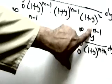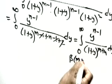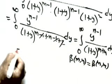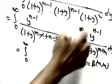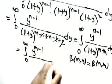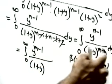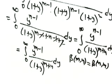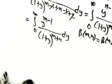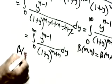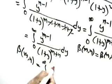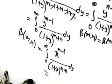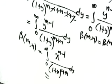Since we already proved beta of m comma n equals beta of n comma m, we can interchange m and n. Replacing y^(n-1) with y^(m-1) and relabeling y as x, we get: beta of m comma n equals the integral from 0 to infinity of x^(m-1) divided by (1+x)^(m+n). This completes the proof.